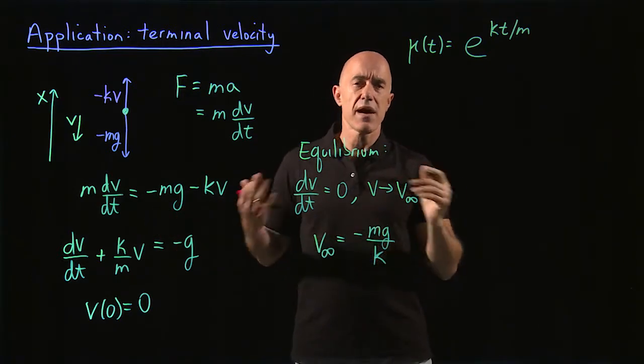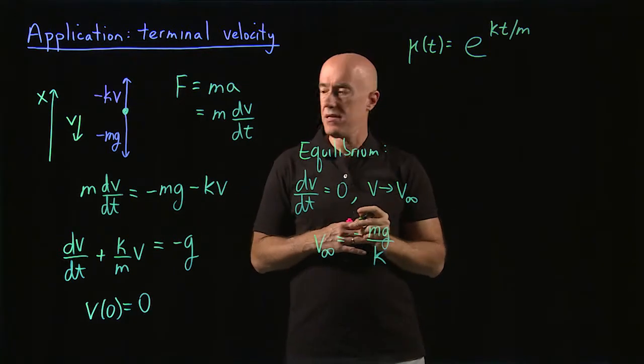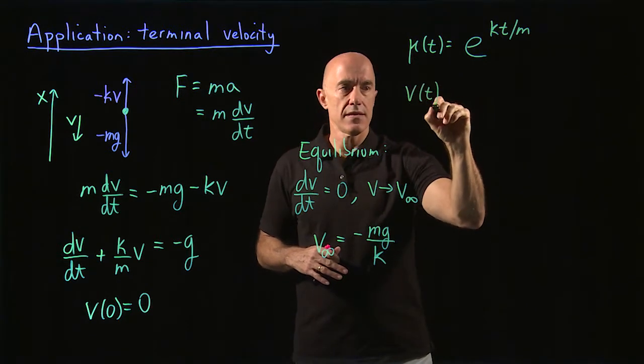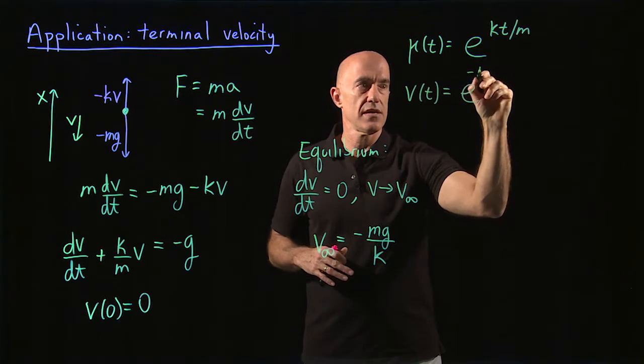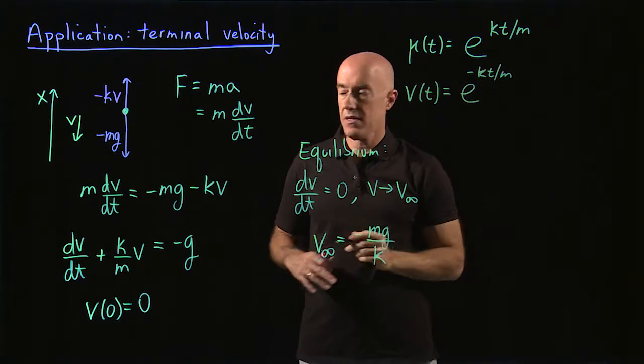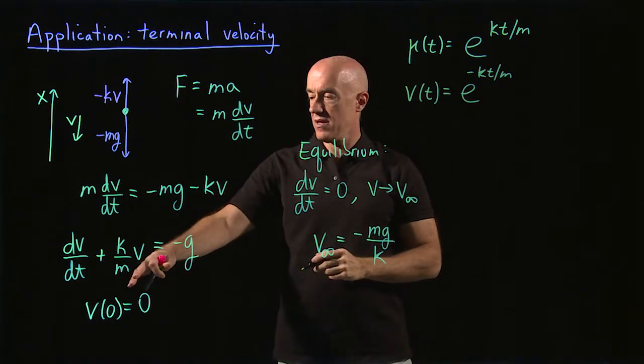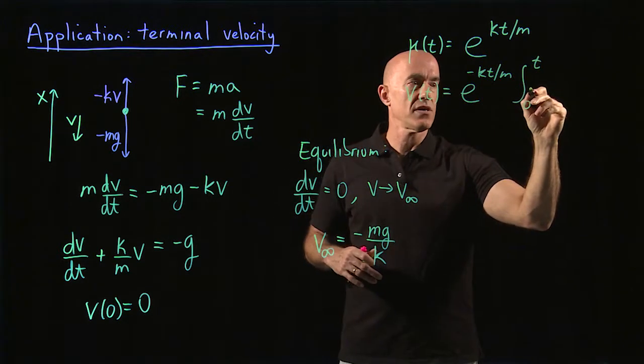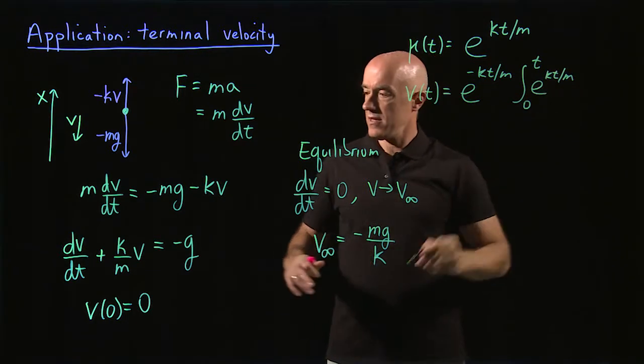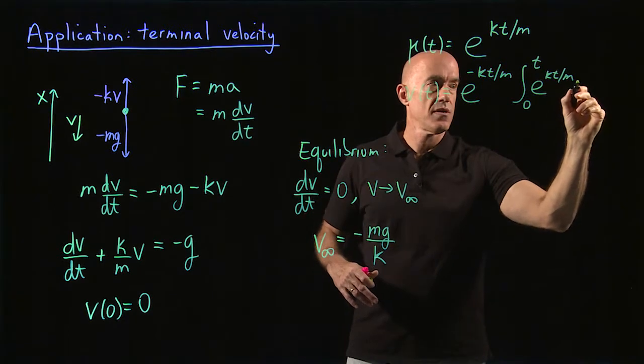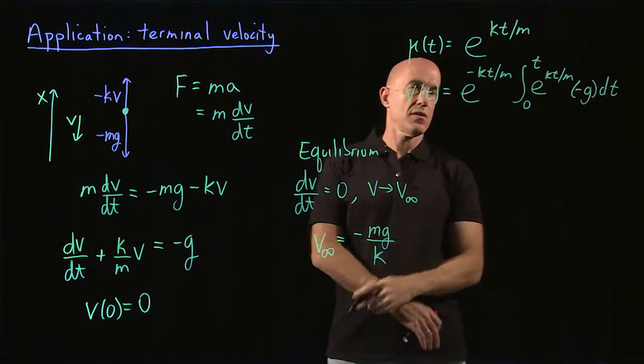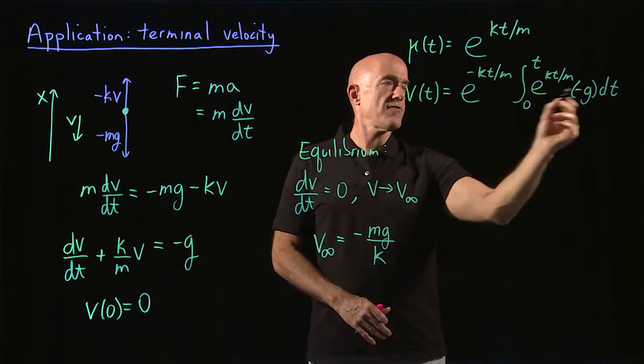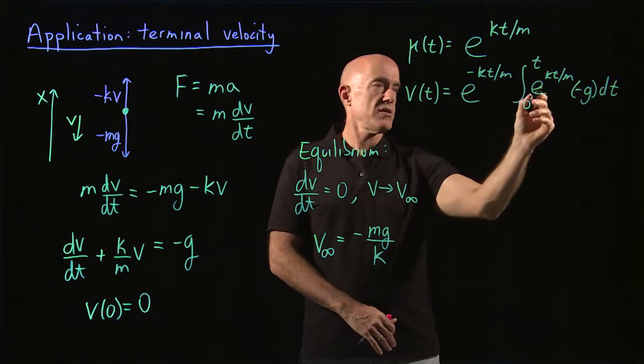So that becomes e to the kt over m as our integrating factor. I think by this point you can do integrals of constants in your head. And then we can write down the solution for v of t. So then v of t is equal to 1 over the integrating factor e to the minus kt over m times the initial value of v, which is 0, plus the integral from 0 to t of the integrating factor e to the kt over m times the right-hand side, which is our minus g.